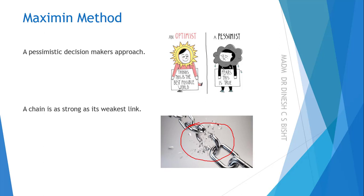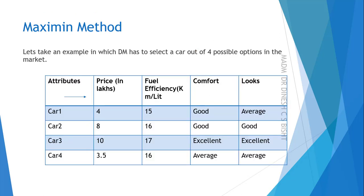How this method works we can see in the next slides. To understand the Maximin method, let us consider one example in which a decision maker is looking for a car out of four possible options available in the market: car 1, car 2, car 3, and car 4. The attributes the decision maker considers are price, fuel efficiency, comfort, and looks. We will understand how the decision maker makes a decision using the Maximin method.